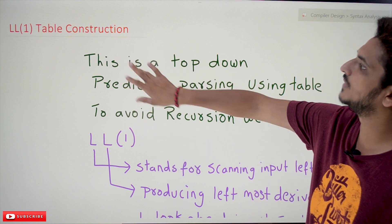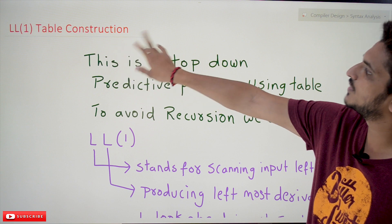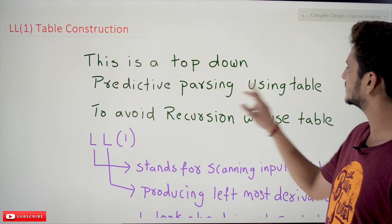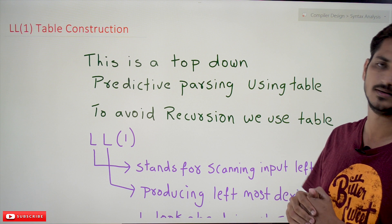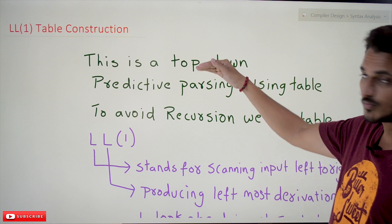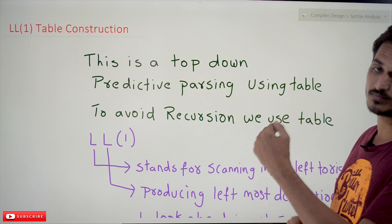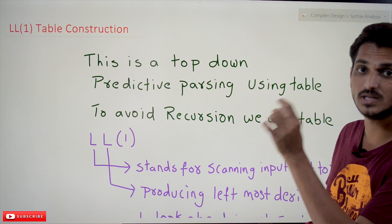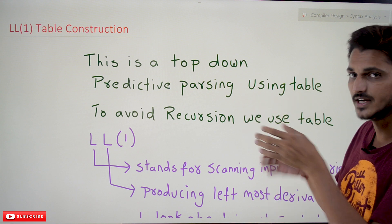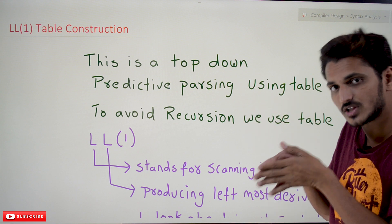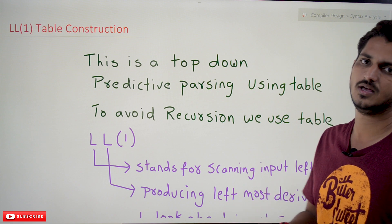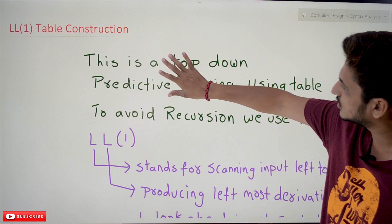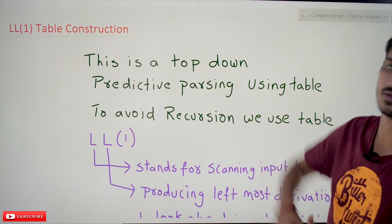LL1 table construction is a top-down predictive parsing using the table method. Being a top-down approach means it starts from the starting non-terminal symbol and constructs derivations downward. To avoid recursion we use a table instead.